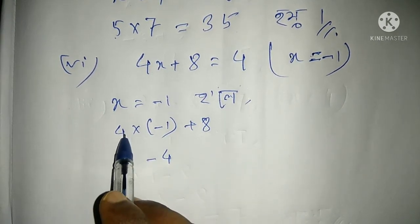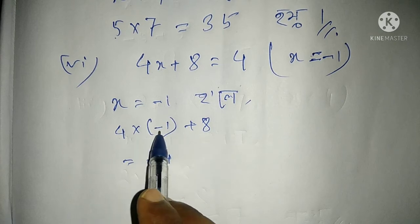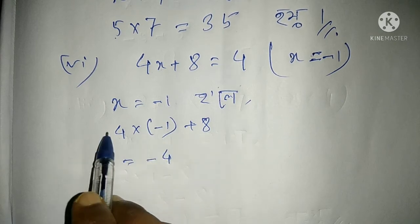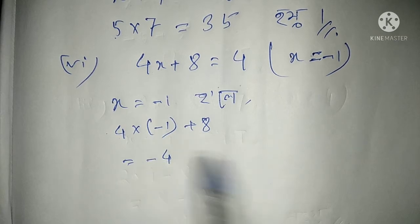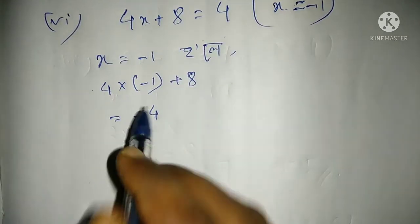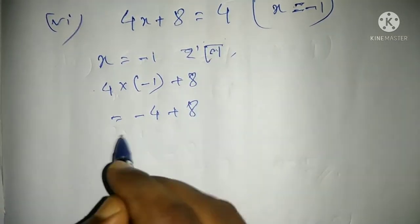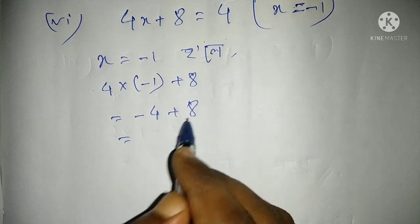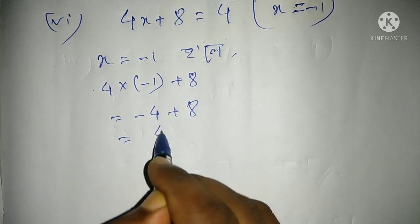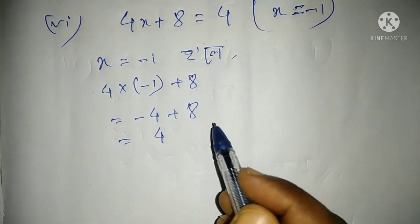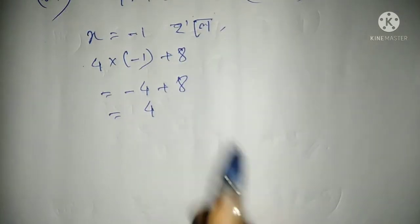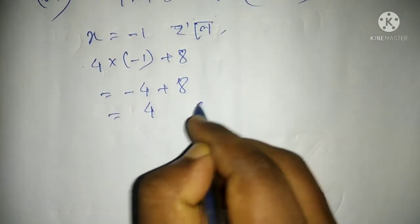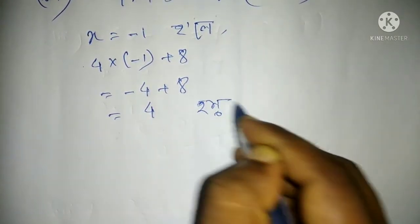So yathe: minus 4 plus 8. The original equation has a plus sign, so it stays plus. Minus 4 plus 8 equals 4. So we write 4, which is correct. The answer is verified — it checks out.